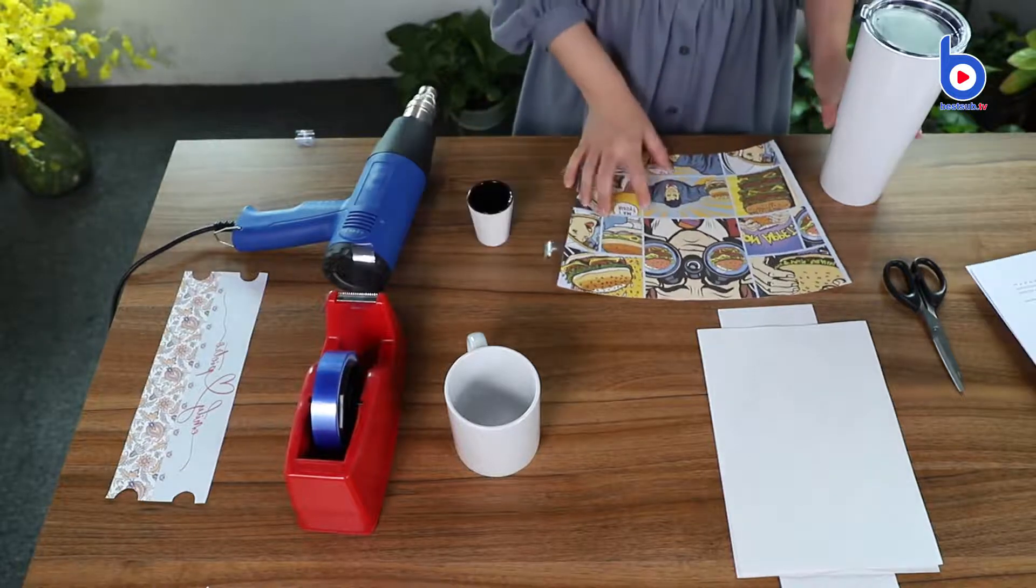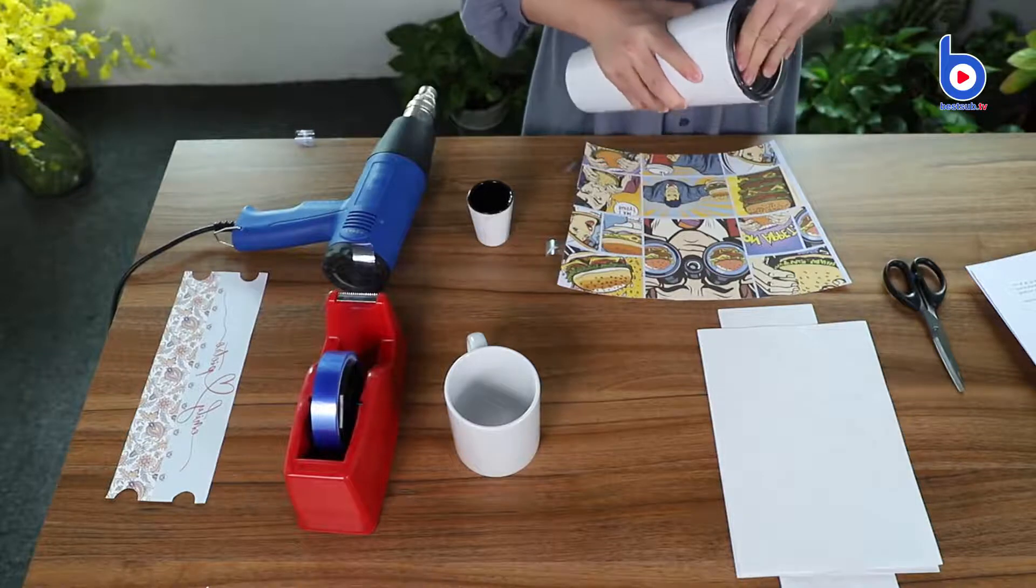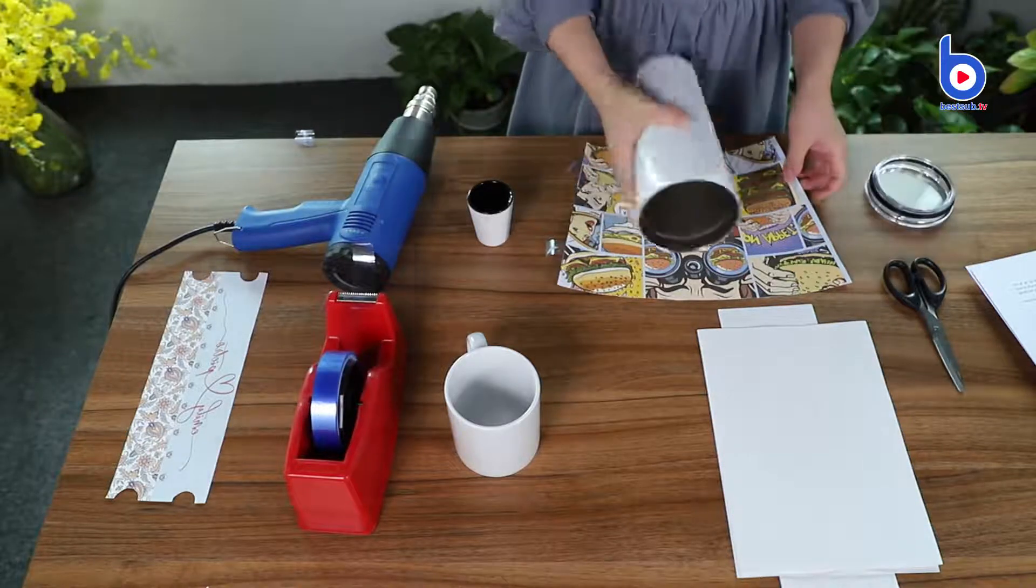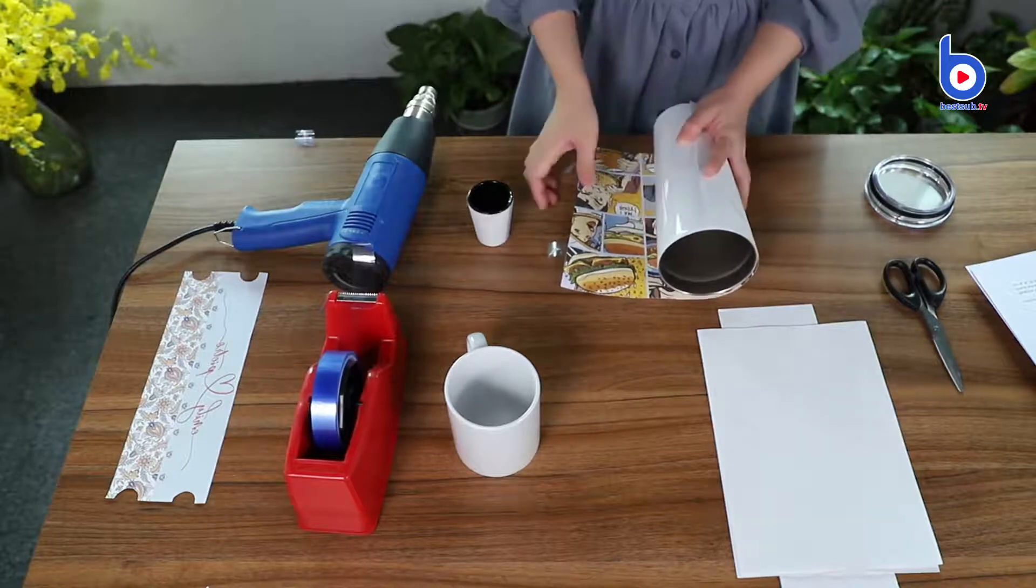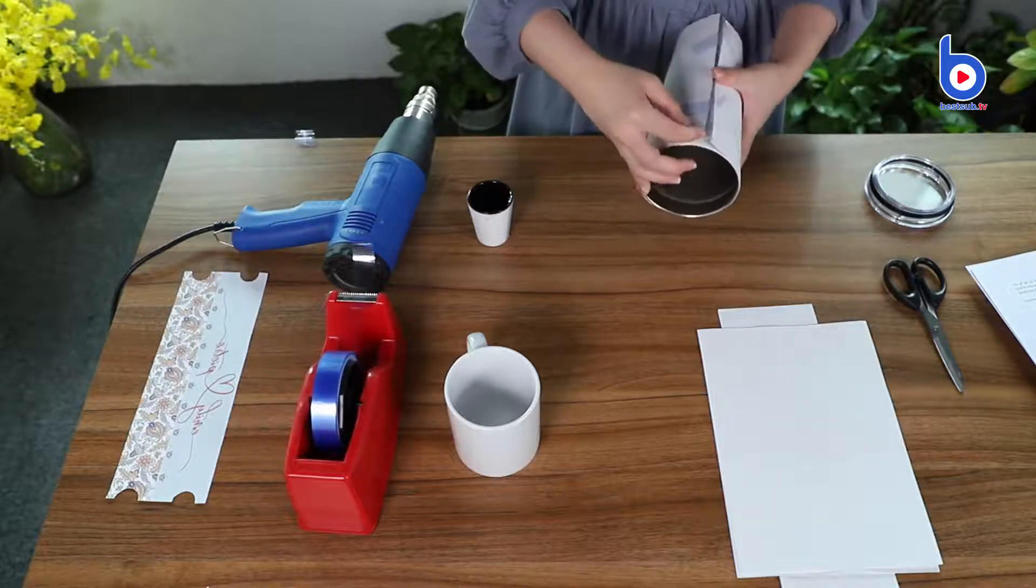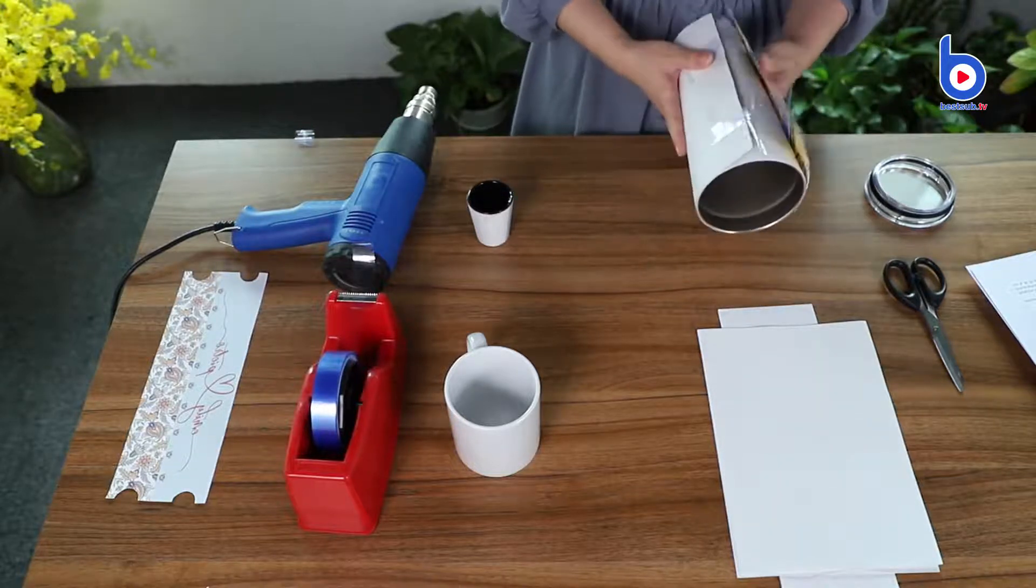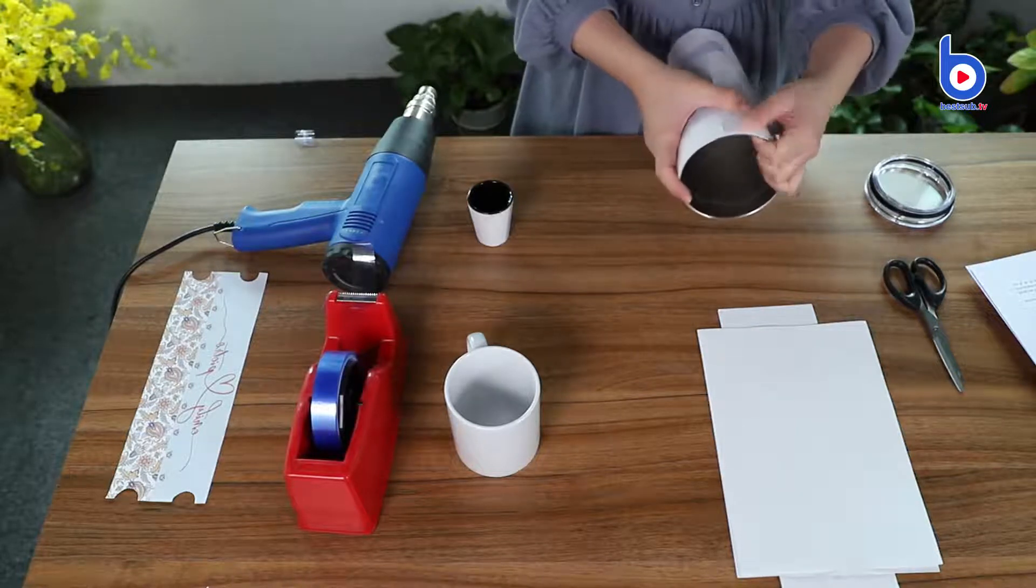It's the same for the large tumbler. But please be sure to take off the lid first. Now I can wrap it with the images and tape the image down.